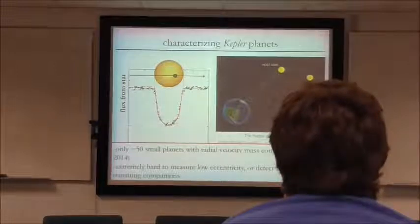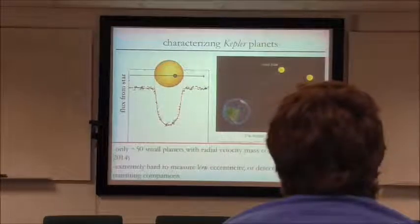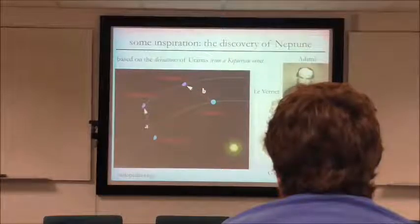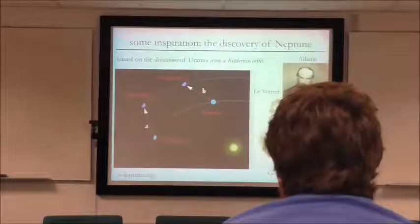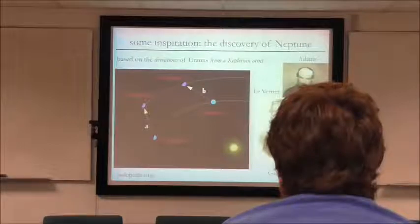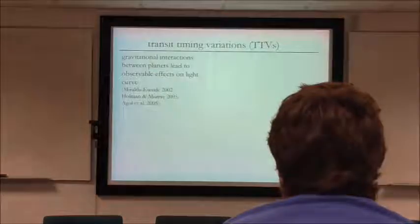Why won't that number increase? Because those targets were the brightest stars with the biggest signals, and modern facilities have basically already gone after the ones they could get. So to make headway and actually characterize this population, the work I've done has drawn inspiration from our solar system. Le Verrier and Adams were monitoring Uranus and saw that its orbit deviated from what they'd expect from interactions with the sun and the other known planets. They inferred the presence of another massive planet exterior to Uranus — Neptune — predicted where it would be, and Galle observed Neptune essentially exactly where they said.